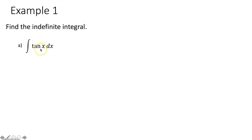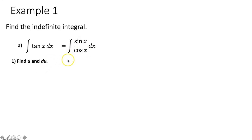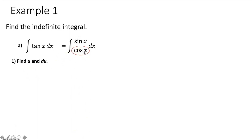Tangent of x equals sine of x over cosine of x. When integrating a rational function with a function in numerator and denominator, we use u substitution — set u equal to whichever function whose derivative gives the other. We can't set u equal to sine x, because its derivative cosine x would need to be in the numerator, not the denominator. So we set u equal to cosine of x. Then du/dx equals negative sine x, so du equals negative sine x dx. Since there's no negative in the problem, we divide both sides by negative 1.